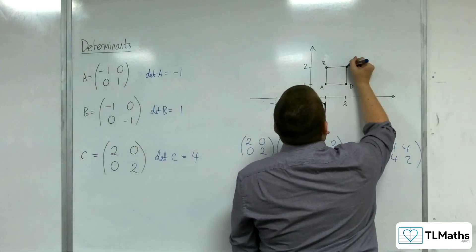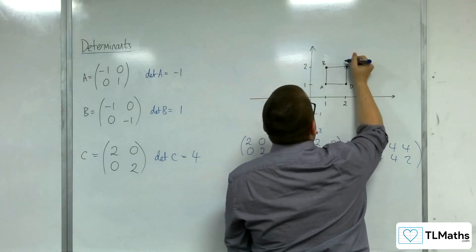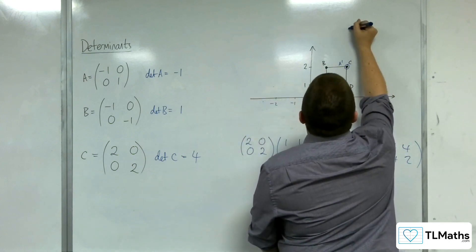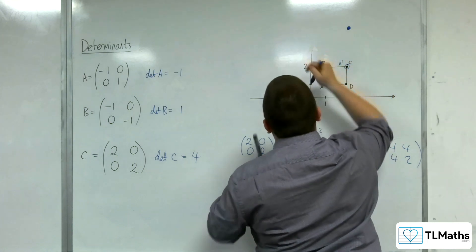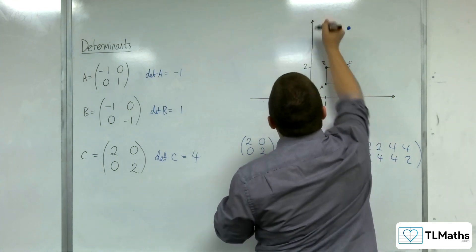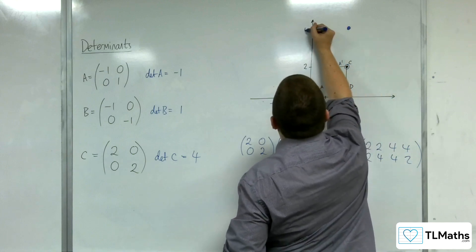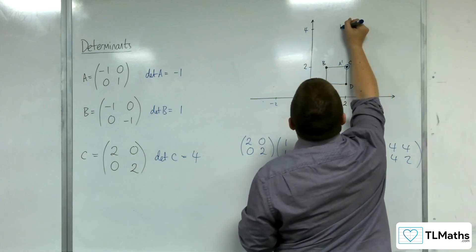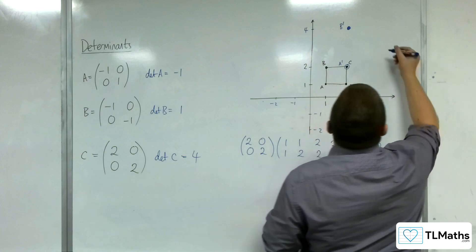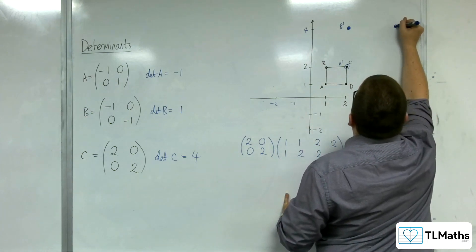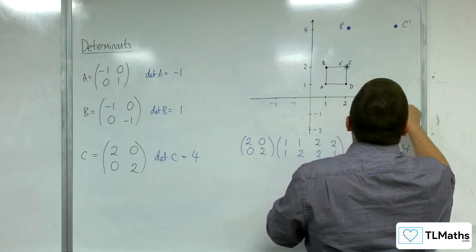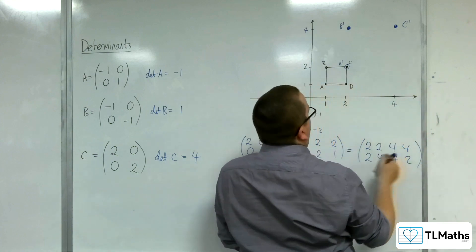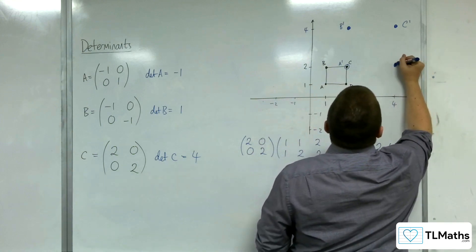So we've got (2, 2), at that point there, that's where A has been mapped to, so that's A prime. Then we've got (2, 4), somewhere up here, so that's B prime. Then we've got (4, 4), which is going to be over here, and that's C prime. And then (4, 2), which is here, and that's D prime.